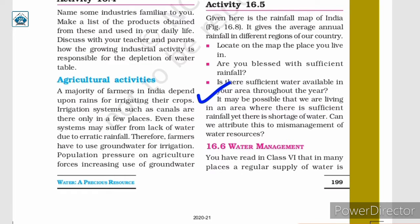Here we are told that even if people are living in a region where the rainfall is sufficient, they still face shortage of water. Why does this happen? Is it because of the mismanagement of water resources? The water we get due to rainfall should be managed properly. If it is not managed properly, there can be a shortage of water even if we are receiving sufficient rainfall.